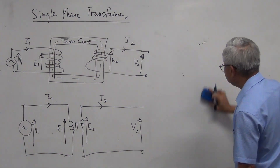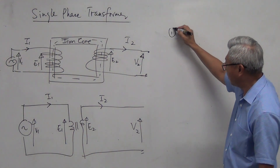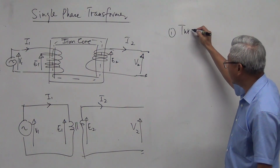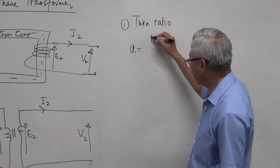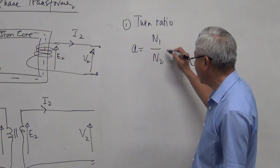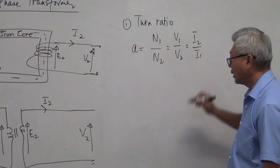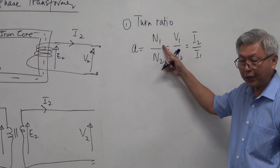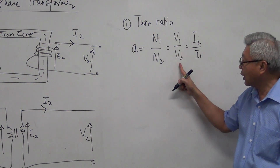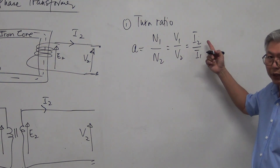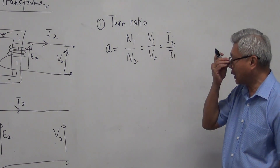To learn transformers, the one very important formula you need is called the turn ratio. Turn ratio is represented by A, and is equal to N1 over N2, which also equals V1 over V2, and I2 over I1. Turn ratio is the number of turns in the primary divided by the number of turns in the secondary, primary voltage divided by secondary voltage. When it comes to current, it's the other way around — secondary current divided by primary current.